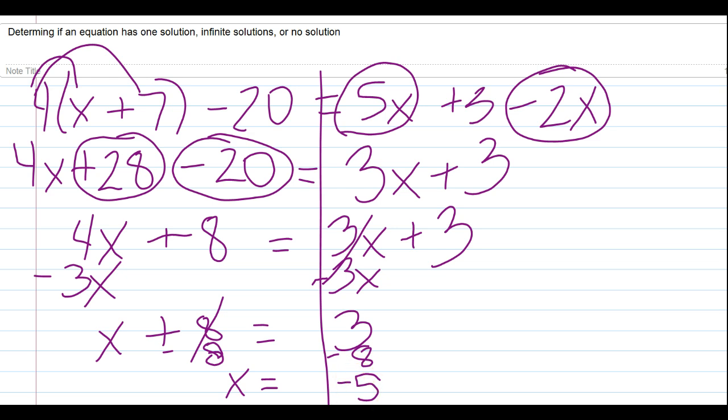So, since we know that x equals negative 5, this problem has one solution. In order for it to work, x must be negative 5. Any other value wouldn't work. If you were to graph this, you would have a pair of intersecting lines. If you put the left side as y1 and the right side as y2, you would create a pair of intersecting lines.